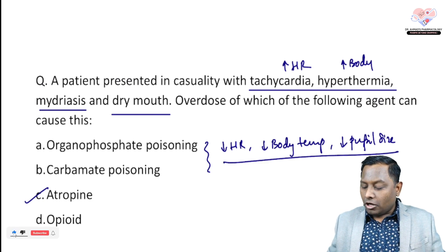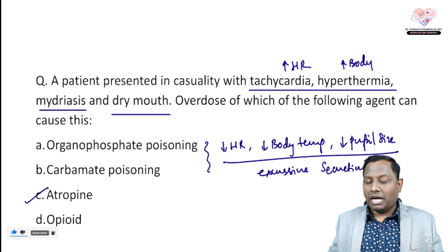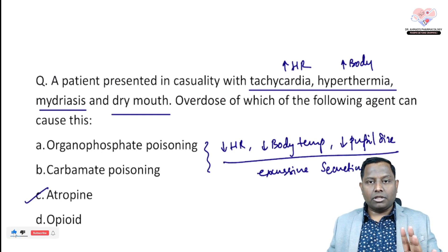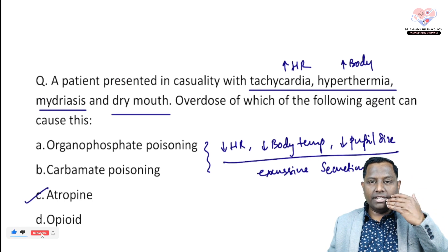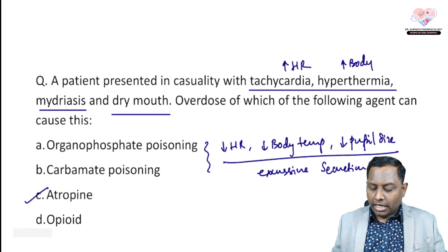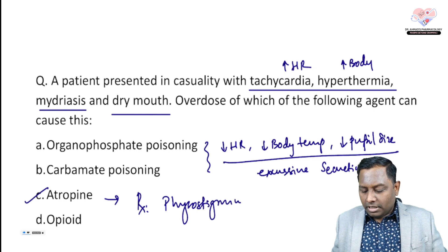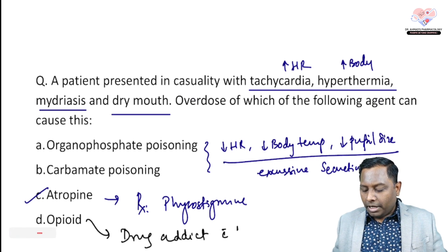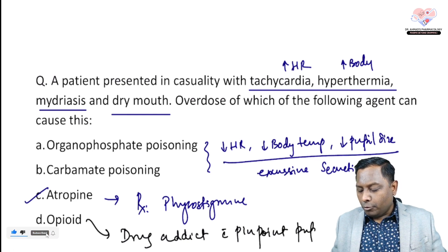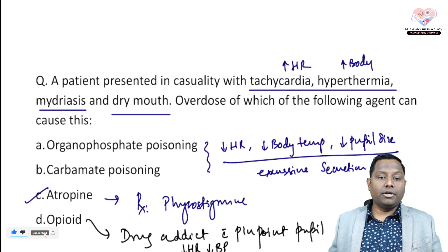In organophosphate or carbamate poisoning, there is excessive secretion which can reduce body temperature and increases the risk of aspiration. Always remember for atropine poisoning: look at the eyes — mydriasis, dryness of mouth, and increased heart rate means atropine poisoning. Antidote for atropine poisoning is physostigmine. For opioid poisoning, there will be history of drug addiction, pinpoint pupils, decreased heart rate, and decreased blood pressure due to cardiac depression.